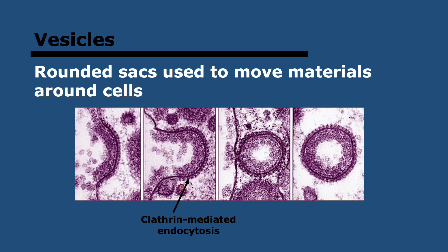Remember that word: clathrin. Clathrin proteins can form a lattice, helping the plasma membrane to become indented. Vesicles are used to move materials around cells — sometimes it's the content inside the vesicle that needs to be moved, but sometimes it's the membrane-bound components like channel proteins. They can also be used to increase the area of the plasma membrane or organelles, because when they fuse again they will increase the available plasma membrane.